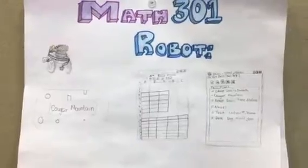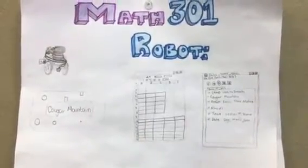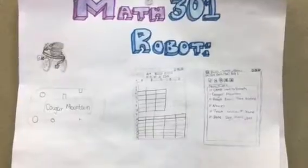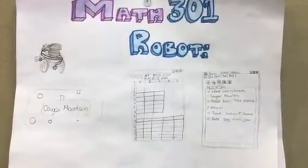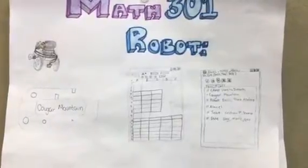In Math 301 we played with the robot. We made calculus for the programmer and the computer and made the robot go in the track power mountain.